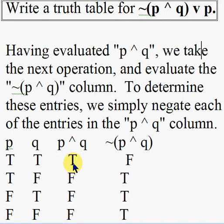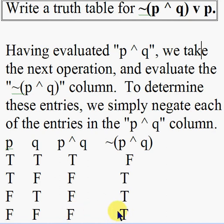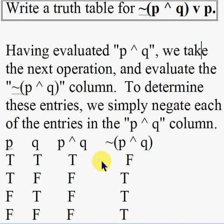We only look at the P AND Q column. NOT(P AND Q) takes each value and changes it to the other: when P AND Q is true, NOT(P AND Q) is false; when P AND Q is false, NOT(P AND Q) is true — and this applies to all three remaining rows. So if it's true we make it false, and if it's false we make it true.